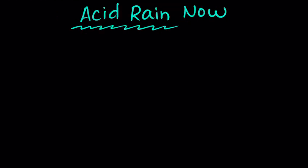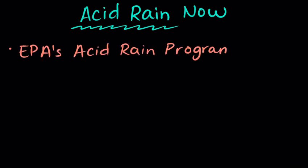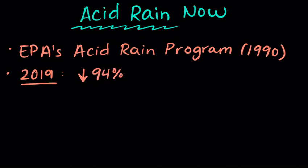There is some good news when it comes to acid rain. In 1990, the EPA created the acid rain program to help power plants reduce emissions. In 2019, when they looked at the levels compared to 1990, they saw pretty great reductions. A 94% reduction in sulfur dioxide and an 86% reduction in nitric oxides.